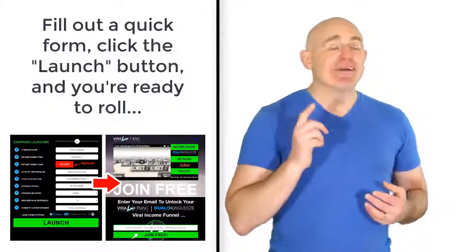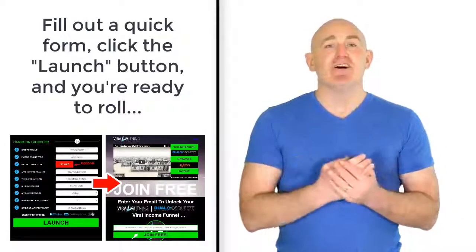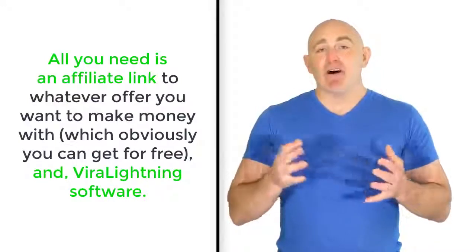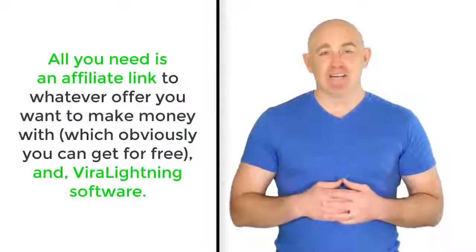build your email list, and generate unlimited potential sales and commissions via the affiliate offer of your choice. All you need is an affiliate link to whatever offer you want to make money with, which obviously you can get for free, and Viral Lightning software.